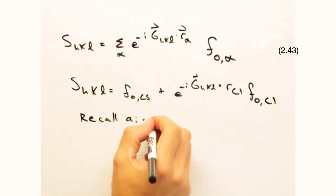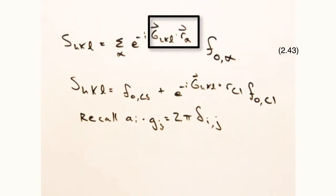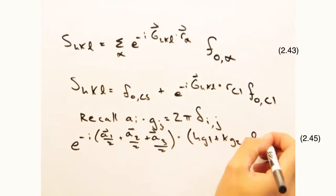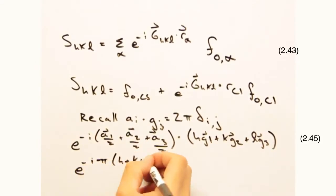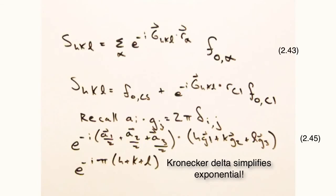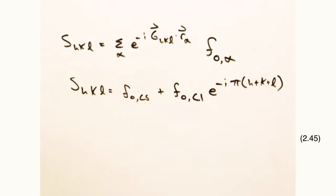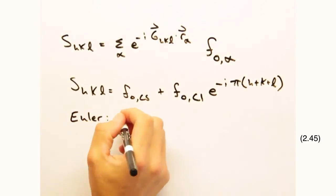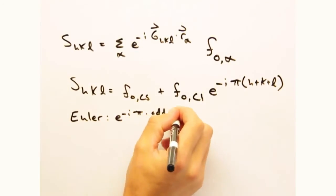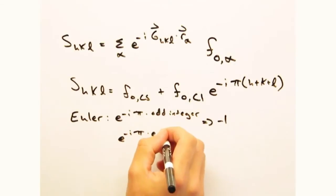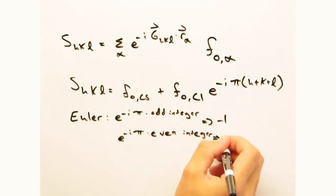Yeah, and so what will the second atom in the summation do? Well, in that case, g_hkl dot r_alpha gives the following. And from Euler we know e to the minus i times pi times some odd integer equals minus one, while e to the minus i times pi times some even integer equals one.